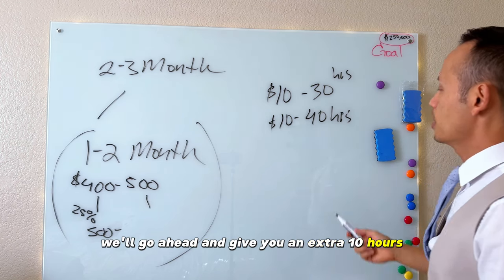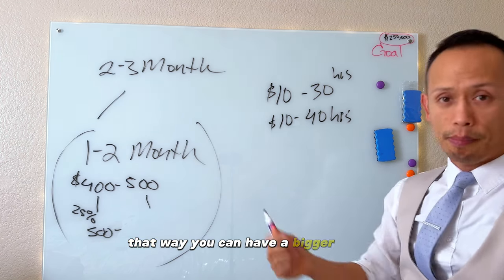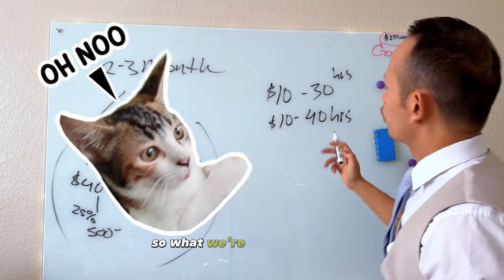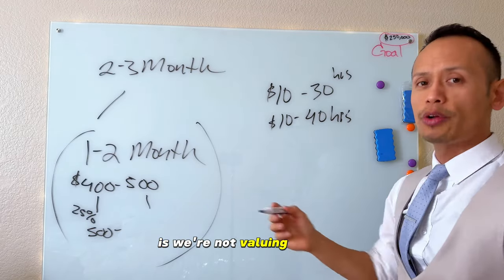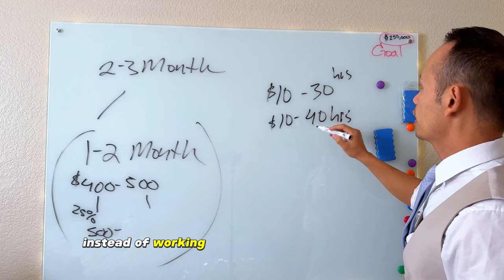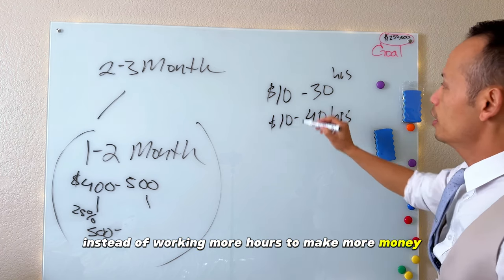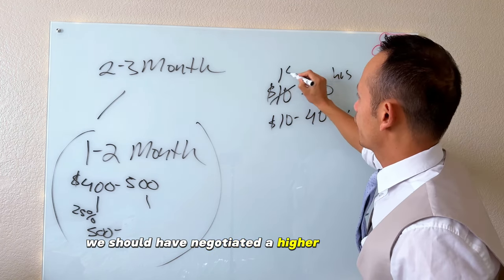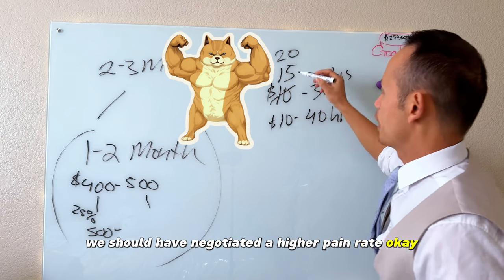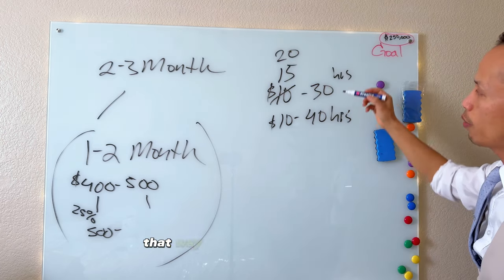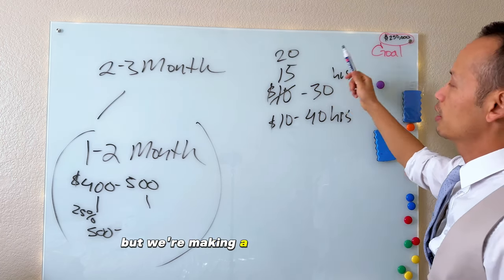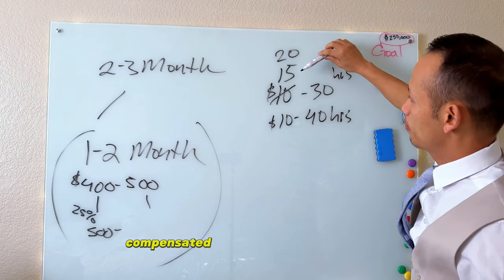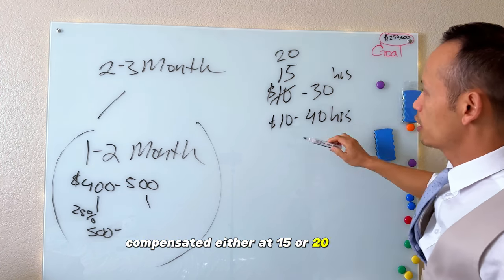So what we're doing here guys is we're not valuing our time. Instead of working more hours to make more money, we should have negotiated a higher paying rate, okay? Even from $15 to $20, that way we're working 30 hours but we're making a lot more money now because we're being compensated either at $15 or $20.